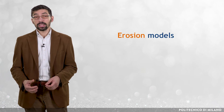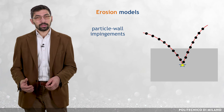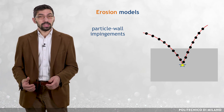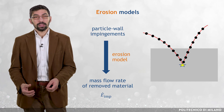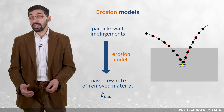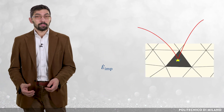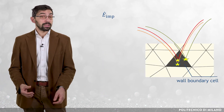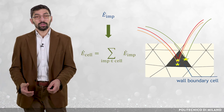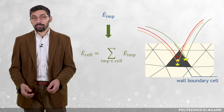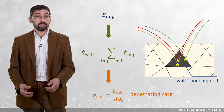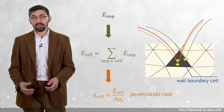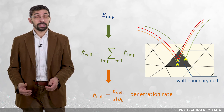The traditional strategy for erosion prediction involves the use of erosion models. Each time a particle trajectory hits a solid wall, the characteristics of the impact — position and parcel velocity — are stored, and an erosion model turns these characteristics into a mass flow rate of removed material from that cell, dot E_imp. Summation over all impingements occurring in a certain wall boundary cell yields the mass flow rate of removed material from that cell, dot E_cell. After dividing dot E_cell by the product between the surface area of the cell, A, and the density of the target wall, rho_T, the penetration rate of the cell is obtained.